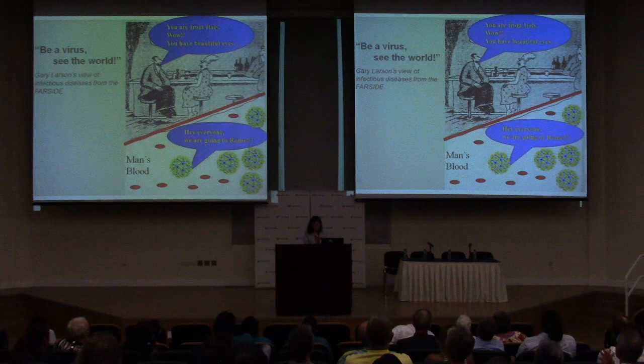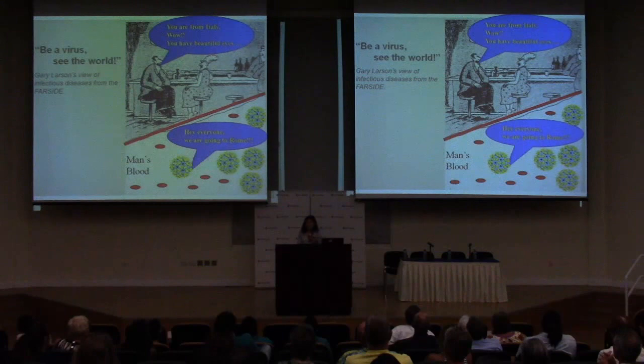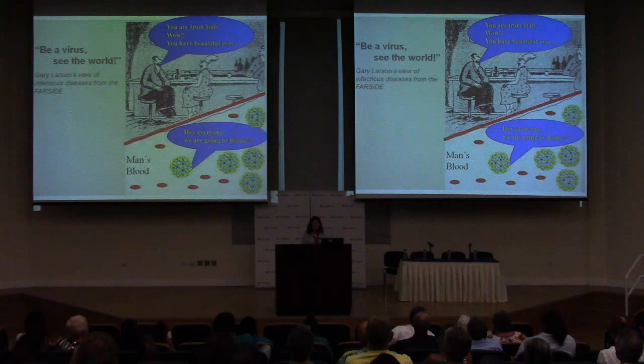This is how viruses travel the world — it's not so much that the mosquitoes get on airplanes. It's that people get sick with the virus, carry it with them on airplanes to new places, and in those new places all the vectors are there just waiting for a taste of the new pathogen in that person's blood. That's how these things spread throughout the world.